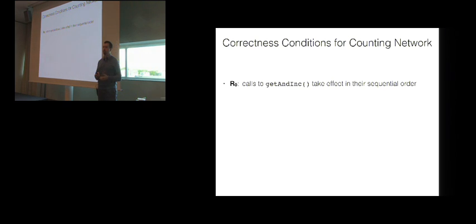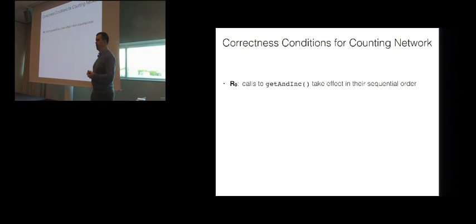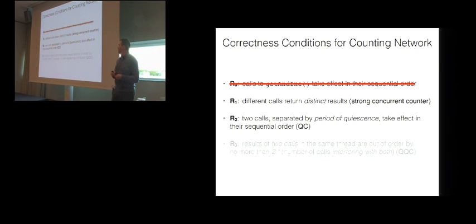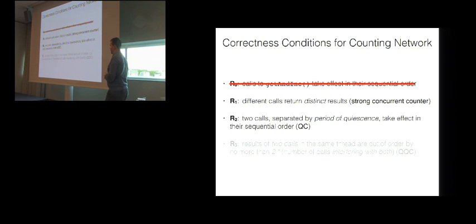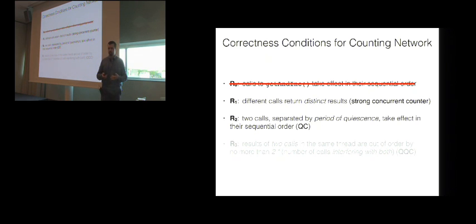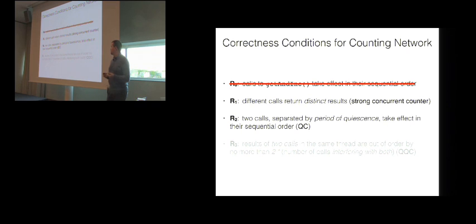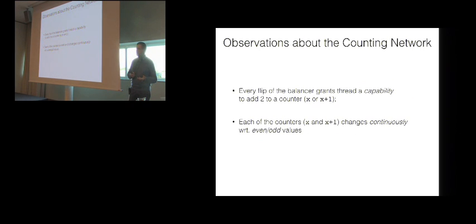Yet this is the data structure we are willing to use. What we want to know is what kind of guarantees we can get out of it. We clearly cannot implement something giving us a strictly increasing sequence of indices in every single thread because of this interference phenomenon. What would be the optimal correctness conditions for this sort of data structure? First, since we are likely to use this counter for emitting unique indices, we need to make sure different calls return distinct values, but not necessarily in increasing order. Second, two calls separated by a period of quiescence should take effect in their sequential order.